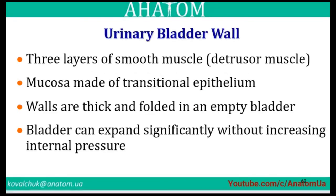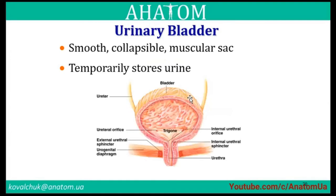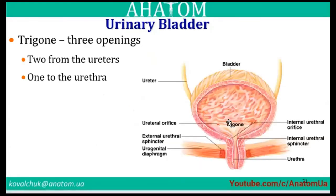The urinary bladder wall has three layers of smooth muscle — also called the detrusor muscle — because it is made of transitional epithelium. The bladder is involved in emptying; it can expand significantly without increasing internal pressure. The bladder structure consists of three layers: outer layer of loose connective tissue, medial layer of smooth muscle and elastic fibers, and inner layer lined with transitional epithelium.